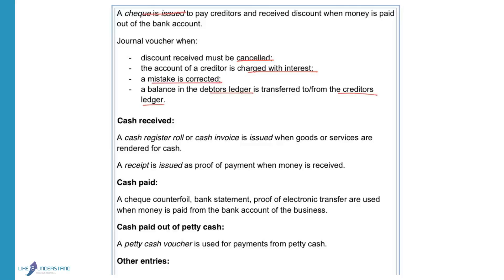Cash received: A cash register roll or a cash invoice is issued when goods or services are rendered for cash. A receipt is proof of payment when money is received — for instance, when money is received from a debtor, the owner increases his capital contribution, or rent is received. Any situation where you need to give proof of payment, you will issue a receipt. When goods are sold or services are rendered for cash, you will issue a cash invoice and not a receipt.